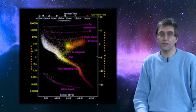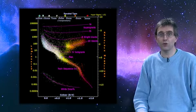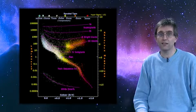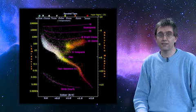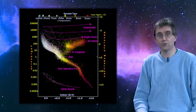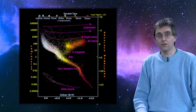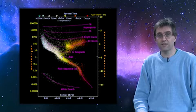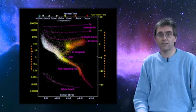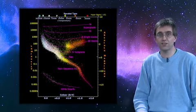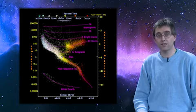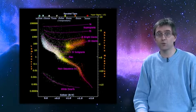Hertzsprung-Russell diagrams have played an important role in our understanding of stellar evolution, and are in some countries part of the curriculum in schools. One common misunderstanding of the diagram is that the position and movement in the diagram represents the spatial movement in the sky.